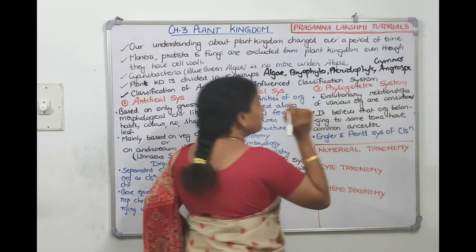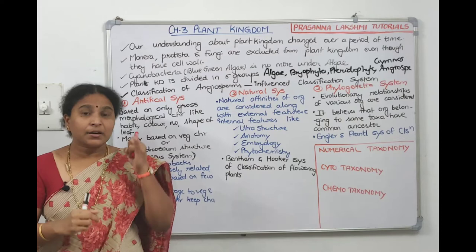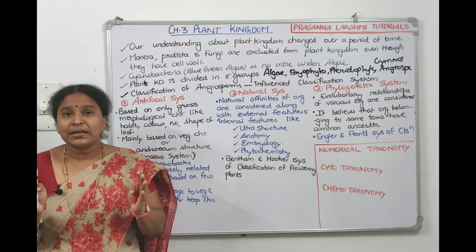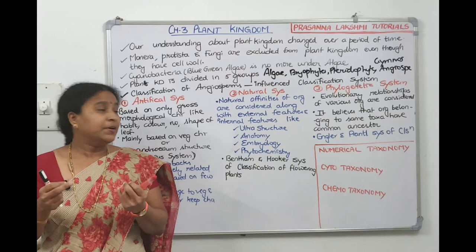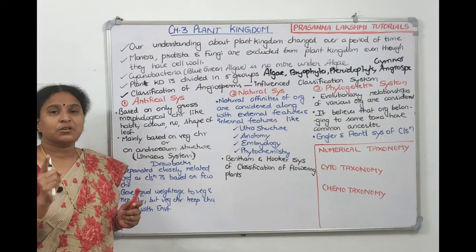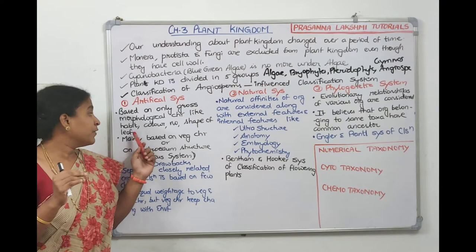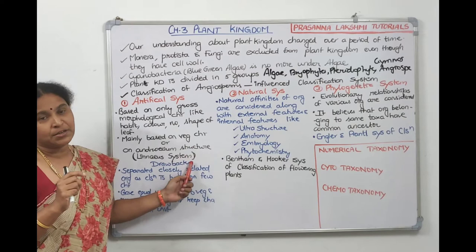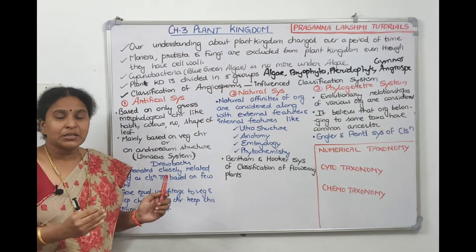There are three systems of classification. The artificial system of classification takes only a few gross morphological characters into consideration — like habit, color, and number of leaves. Linnaeus also took androecium structure into consideration for artificial classification. Vegetative characters like leaf color and number are primarily used.